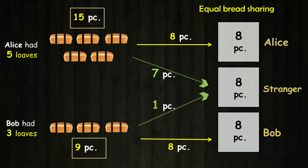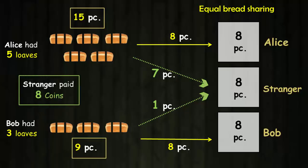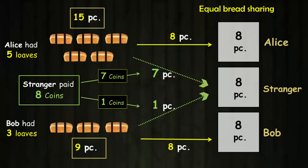In return, the stranger gave them eight coins. So Alice would get seven coins as she shared seven pieces with the stranger, and Bob would get only one coin as he shared only one piece with the stranger.